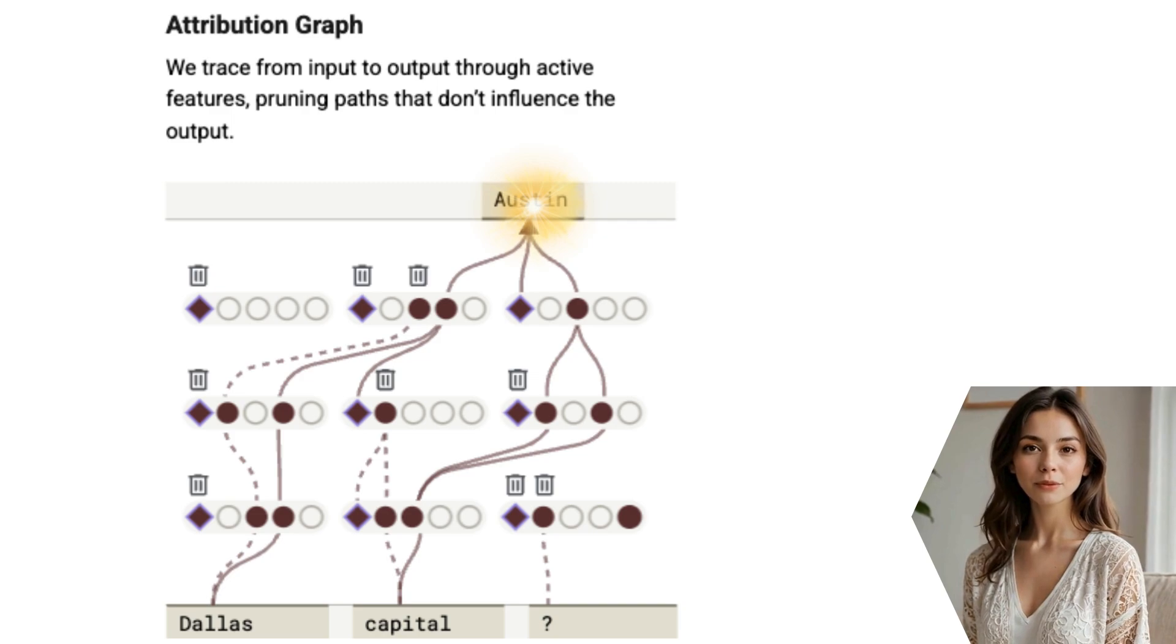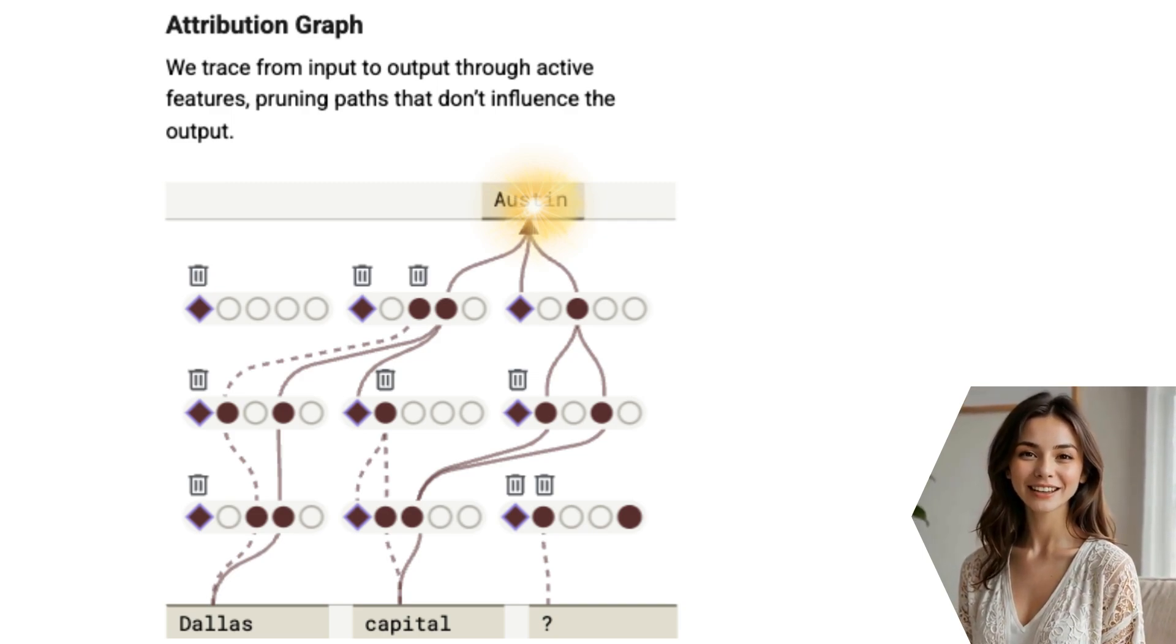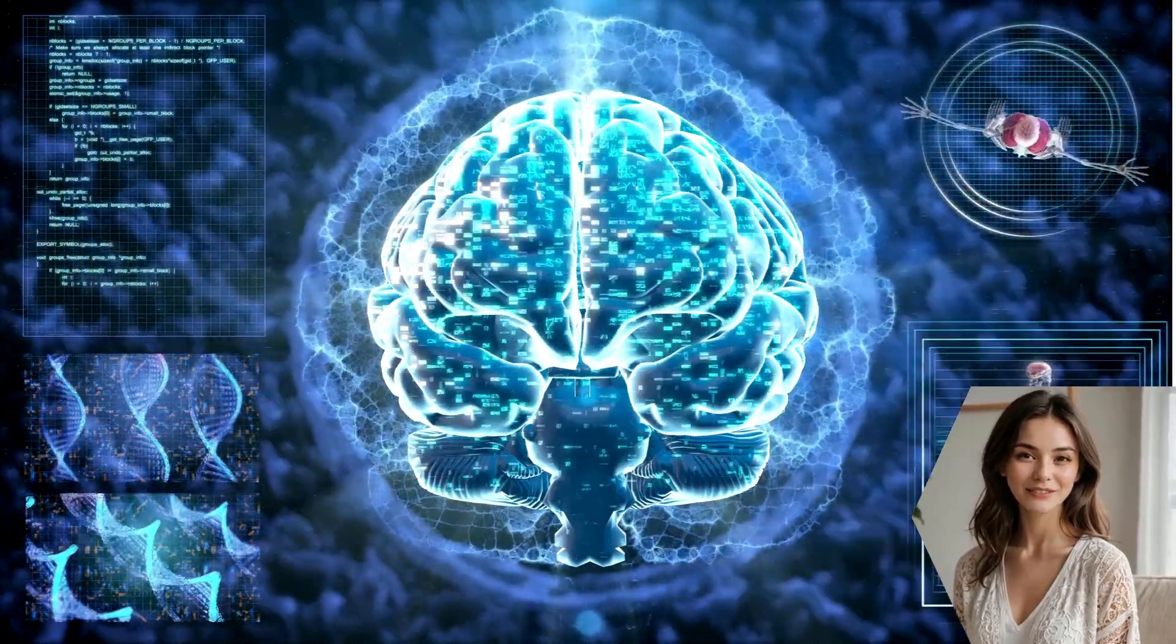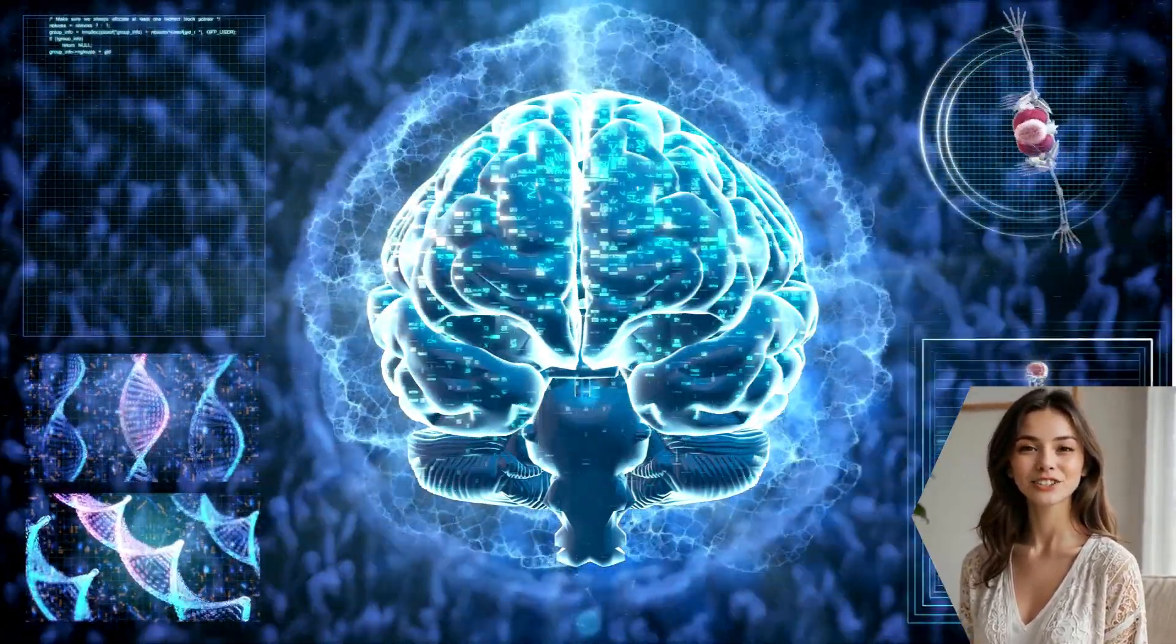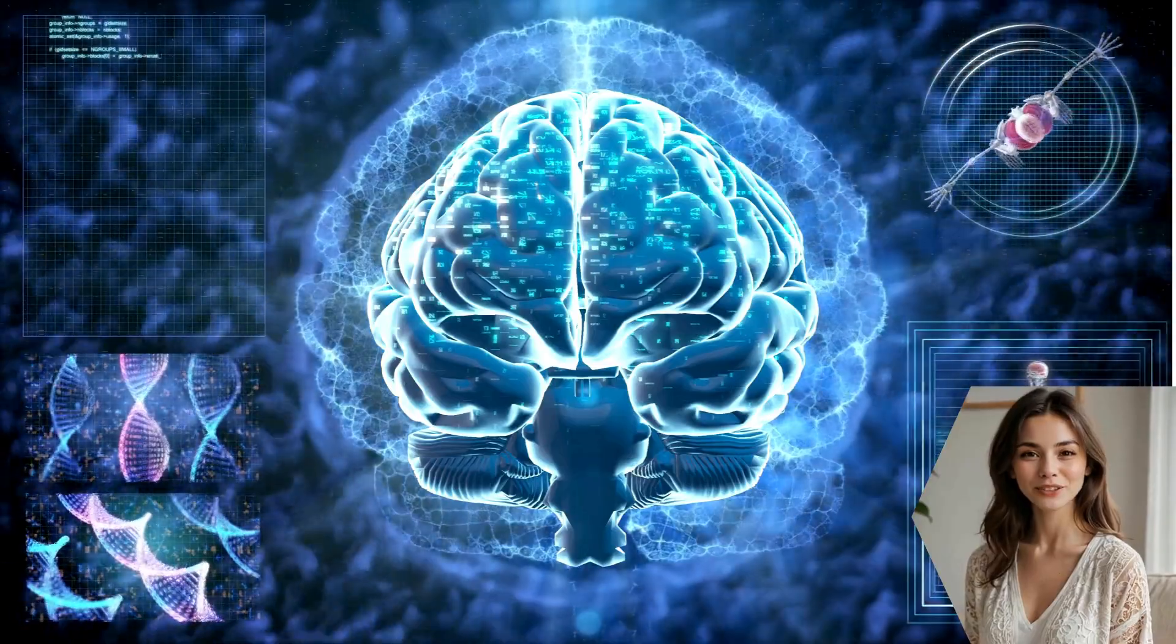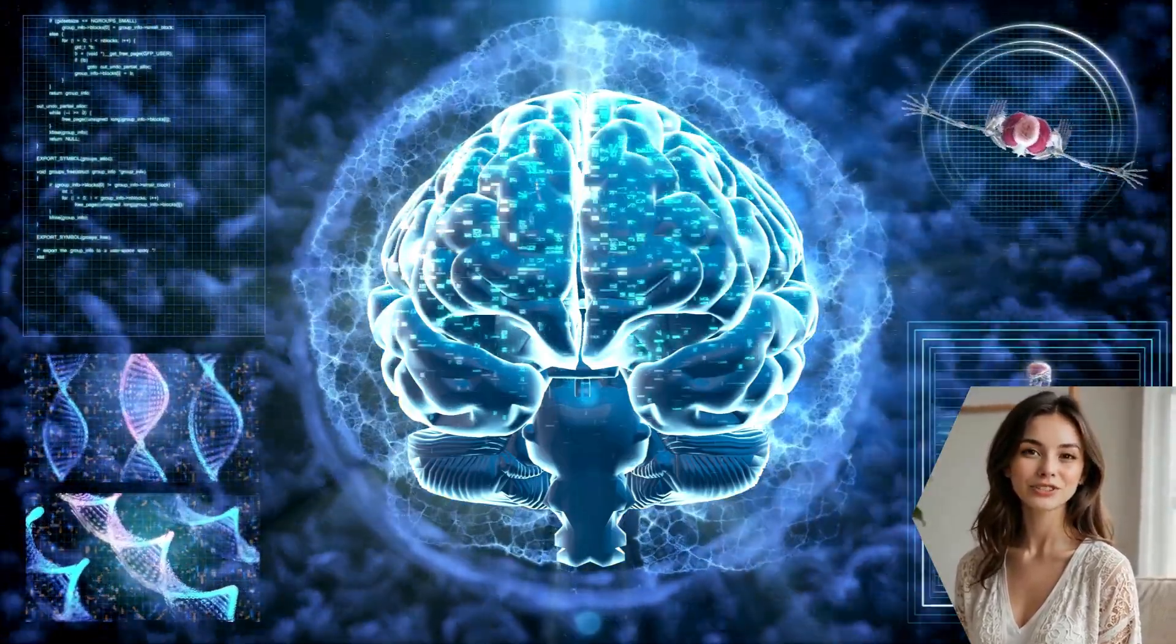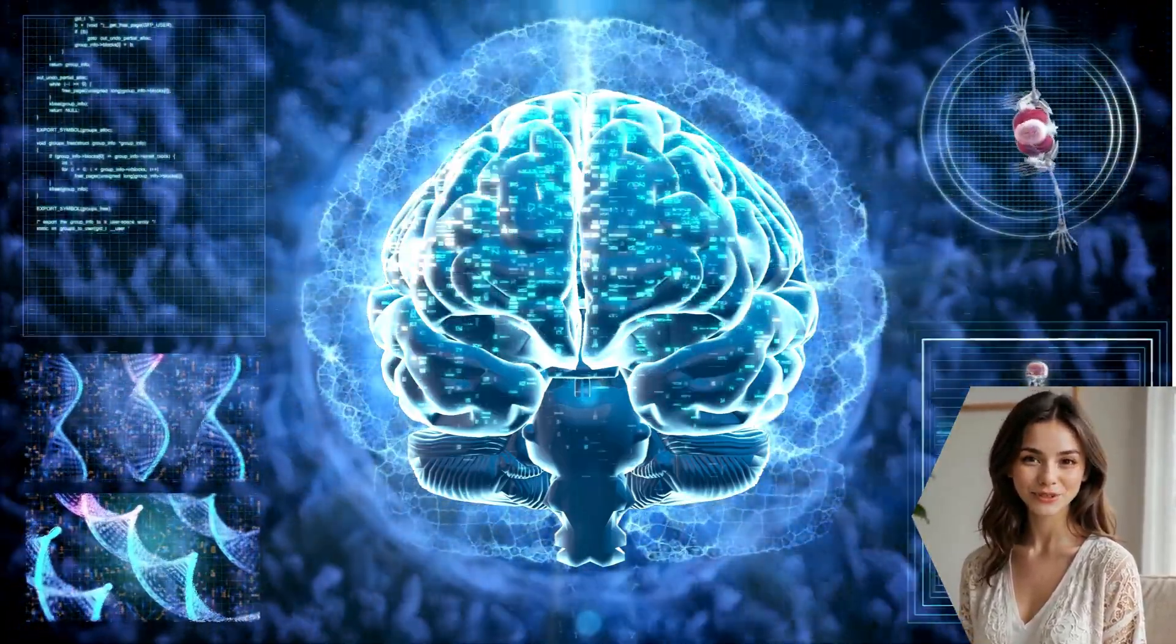You can think of attribution graphs as essentially wiring diagrams of the model's thoughts, showing how these features connect and activate each other to produce a final answer.